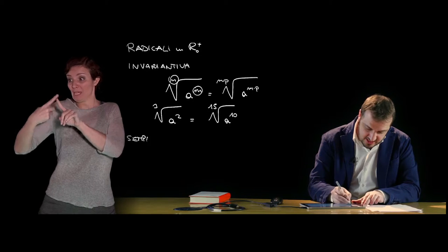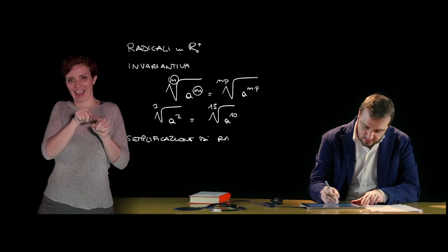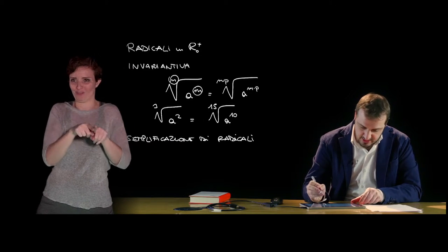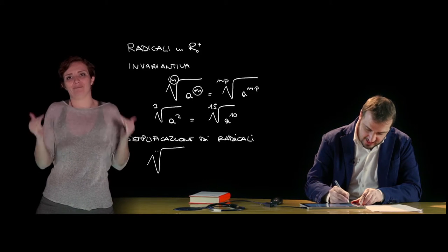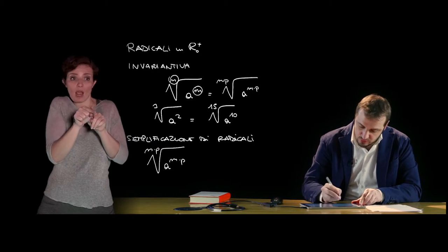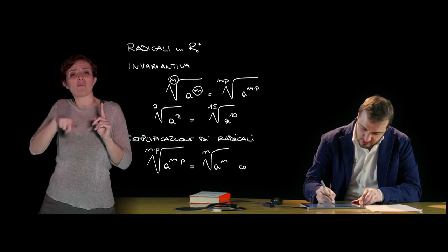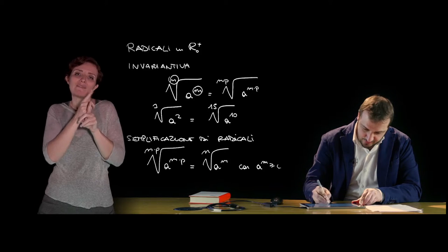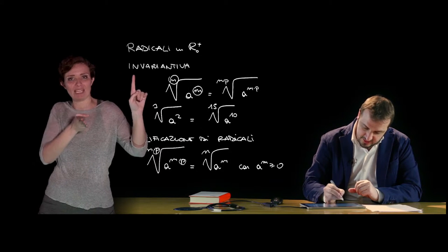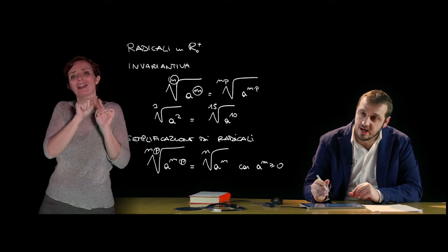This property is very useful because from it one can move to the concept of simplification of radicals, which is essentially the inverse property. It states that, given a radical, one can obtain an equivalent radical by dividing both the index of the radical and the exponent of the radicand by a common divisor, provided that a to the m is non-negative. When no common divisors exist, we speak of irreducible radicals.